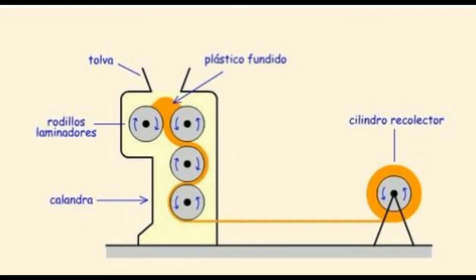El calandrado es un proceso de transformación de termoplásticos para la elaboración de láminas flexibles o semirrígidas de espesor reducido. Consiste en hacer pasar el material plastificado por dos o tres cilindros dispuestos con sus ejes paralelos, proporcionando una lámina cuyas características se ajustan a una serie de cilindros de calibración, enfriamiento, acabado y recogida.